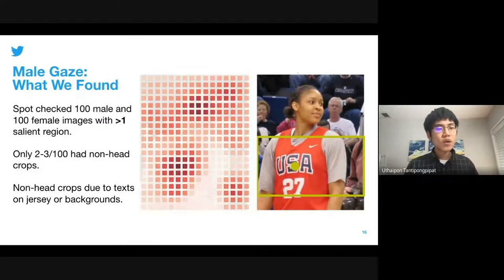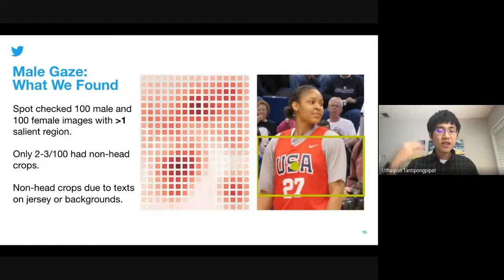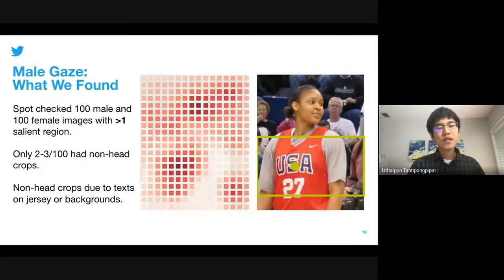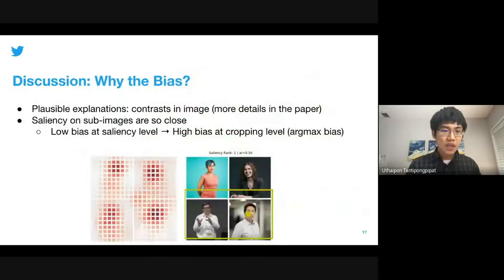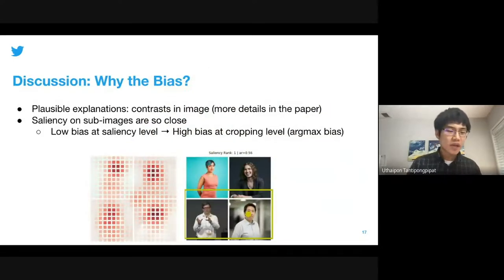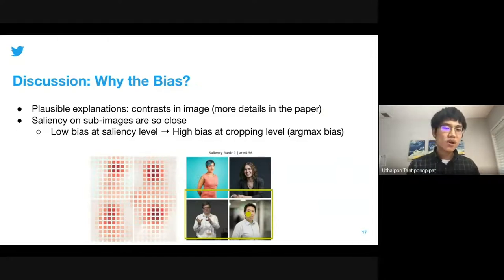For male gaze, we looked at images with at least one southern region, because that may produce a crop not just on the top but also in the middle or on the bottom. Even then, only a couple hundred were found to have a non-head crop, and for those, it was because of text, jerseys, or backgrounds. We also add possible explanations that it may be contrast. We also found that at the saliency level, the bias is not as strong because the saliency scores are very close, which leads us to the next topic: argmax bias.